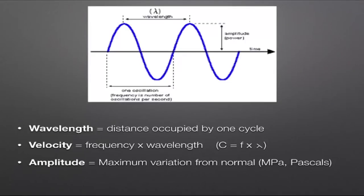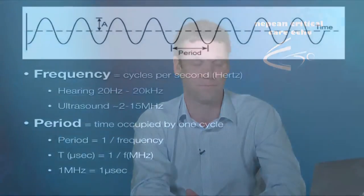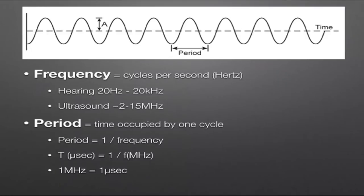The amplitude is the maximum variation from normal — the peak pressure, measured in pascals or megapascals. The frequency is the number of cycles per second, measured in hertz. As we talk and listen, we're hearing anywhere between about 20 Hz up to 20 kHz. Ultrasound, of course, we can't hear because it is at a much higher frequency — somewhere in the region of 2 to 15 megahertz, or a million hertz.